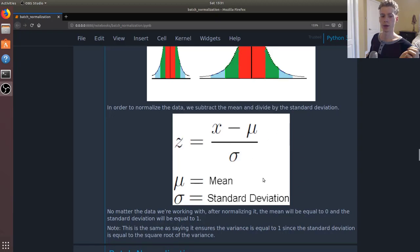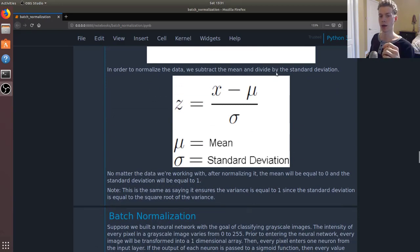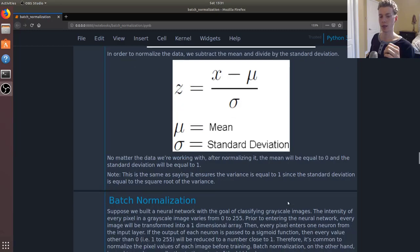We can normalize our data by subtracting the mean and then dividing by the standard deviation. No matter what your values are, after applying this function, the mean will be zero and the standard deviation will be equal to one.